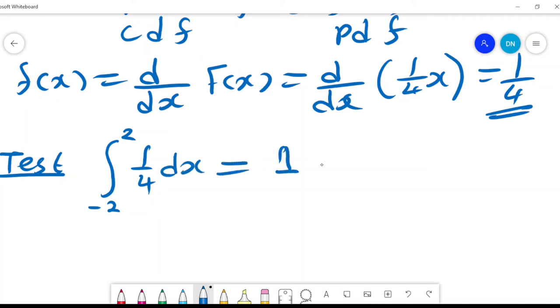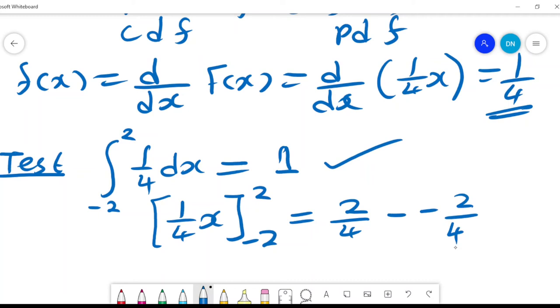And I know this is a quarter X. If I say from negative 2 to 2 in this case, then you realize that this will be 2 over 4 minus negative 2 over 4, and that will give me 4 over 4, which equals 1.